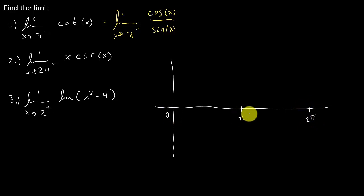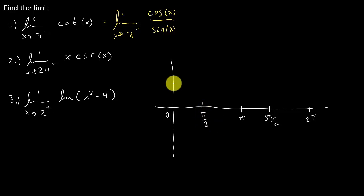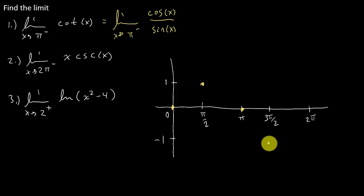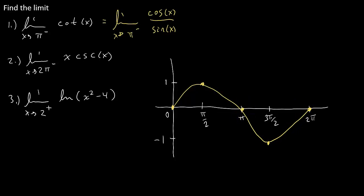We're just going to make a rough sketch, and you should know how to graph this. So that's going to be 1, negative 1. First, let's graph the sine function. The sine starts at 0, maximum, 0, then it goes to its minimum, and then back to 0. And then let's graph the cosine function. It starts at a maximum, 0, then it goes to its minimum, 0, and then back to its maximum.